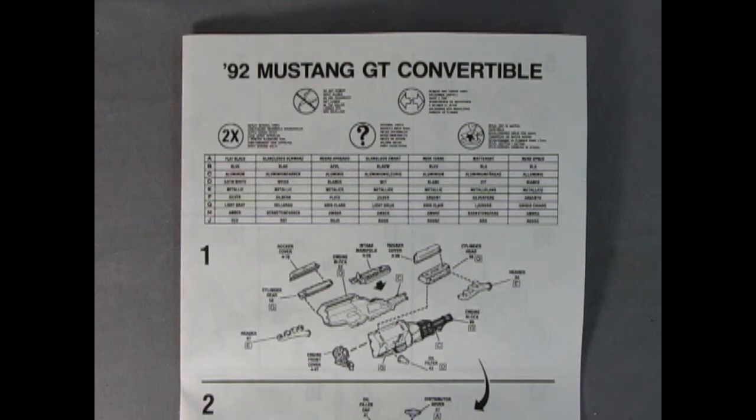Now Monogram has included a really nice instruction sheet. It's very straightforward and easy to understand. You've got all the symbols that we're going to be using to build our model as well as this nice paint chart with the letters that correspond with the part numbers. We've got our right and left hand side engine block with the oil pan molded in place. You glue on an oil filter, right and left exhaust headers, cylinder head, rocker cover, intake manifold, and the front engine cover.